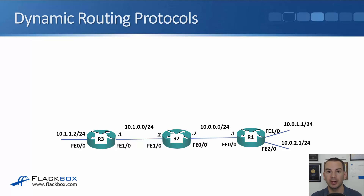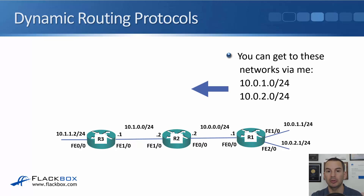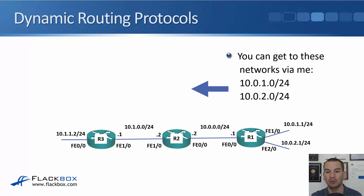So what we'll do is configure a routing protocol on R1, R2, and R3, and they will then share information about their networks with each other. R1 and R2 form a peering relationship with each other, and R2 and R3 also form an adjacency. R1 will then advertise its routes to R2, telling R2 it can reach 10.0.1.0/24 and 10.0.2.0/24 via R1. That information comes in on the FastEthernet 0/0 interface on R2, and it sees that it came from R1 at IP address 10.0.0.1/24, which R2 then uses to update its routing table.